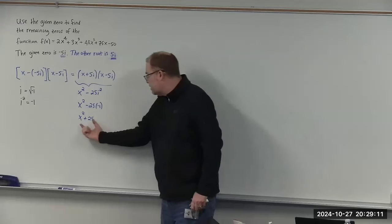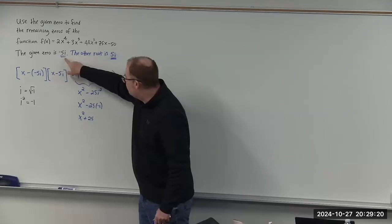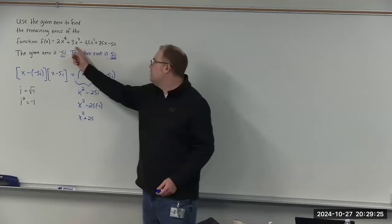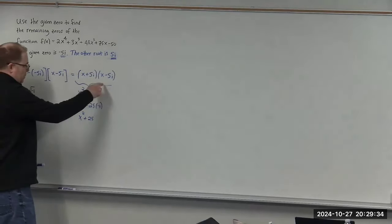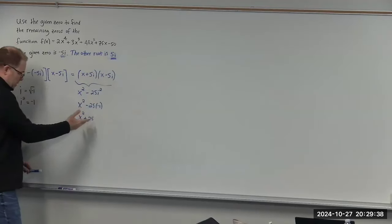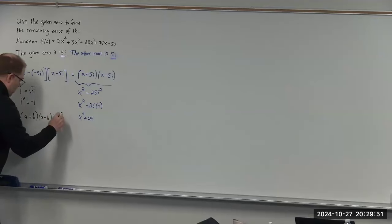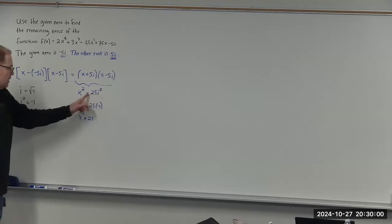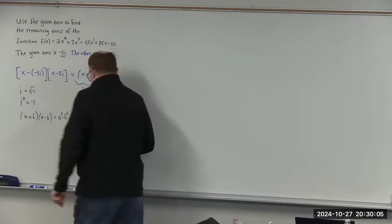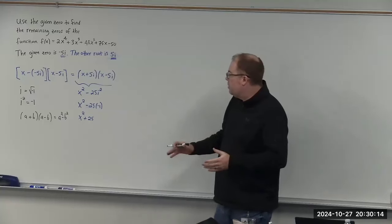So x squared plus 25 is a factor of our original polynomial, since negative 5i and 5i are zeros of this function. The reason it comes out positive is because i squared is negative 1, so negative times negative gives us positive. Now we have that information, and for the rest of this we're going to use long division — we're going to divide our original function by x squared plus 25.